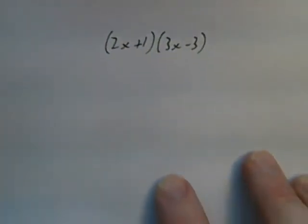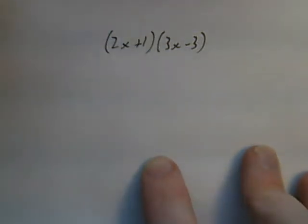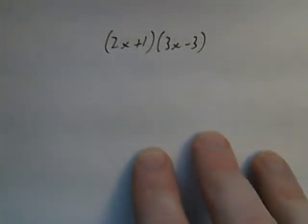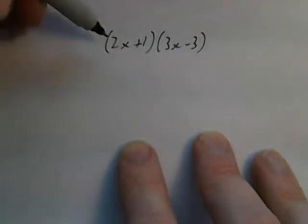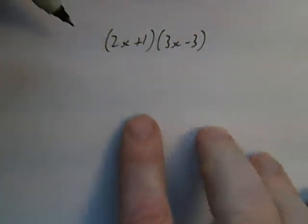One more example. Here I've got a number in front of my x terms. Same rules apply. Just remember that the numbers in front of the x terms must be multiplied as well.